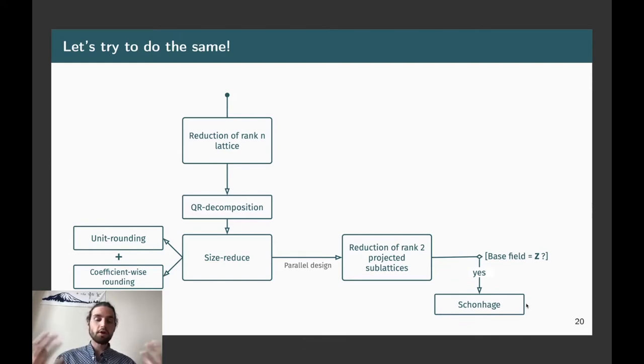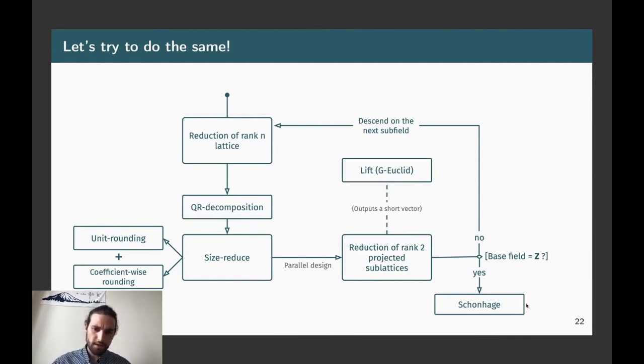And then the question is how we reduce this rank 2 projected sublattice. So, if the base field is already Z or Q, then okay, we know how to do it. We just use Gauss or even a faster algorithm like Schönhage's algorithm. But if the answer is no, what we can do is, instead of calling a SVP oracle there, to descend this rank 2 projected sublattice onto the subfield which is just under the field we are working in. And then, it will mean that we need to reduce another full rank lattice of bigger dimension. And then we do that recursively. And once this reduction is done, what we get from this reduction is a short vector. And this short vector needs to be lifted up to the upper field. And we can do that using some kind of generalization of the Euclidean algorithm. And then we do exactly the same as we would do for the Nguyen LLL and cycle until the basis is reduced.